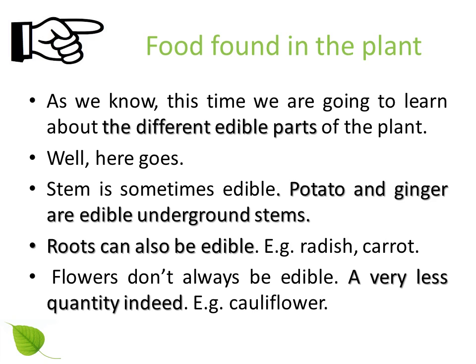We are going to learn about the different edible parts of the plant. The stem is sometimes edible — potato and ginger are edible underground stems. Roots can also be edible, for example radish and carrot. Flowers are not always edible, only a very small quantity — for example, cauliflower.